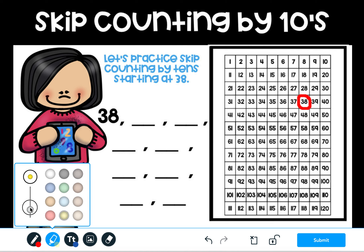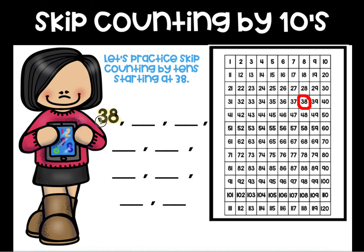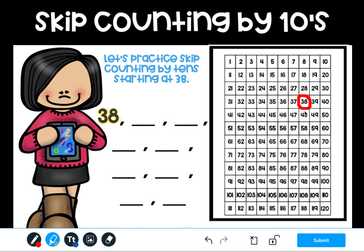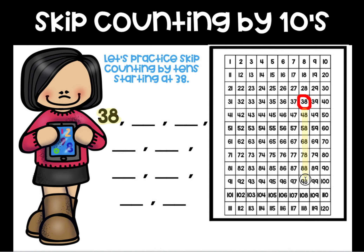Now I'm going to switch over to my highlighter tool because I want to highlight all of the numbers after that. If we are skip counting forwards, we know the numbers are going to get bigger. If you skip count backwards, the numbers will get smaller. I am skip counting forward so am I going to highlight the numbers that get bigger or the numbers that get smaller? If you said I'm highlighting the numbers that get bigger, you are correct. I'm going to highlight all the numbers after 38 straight down the line.